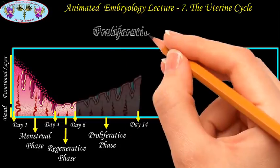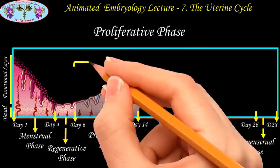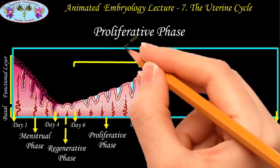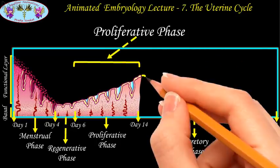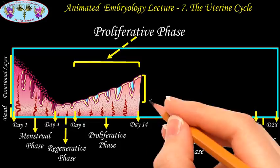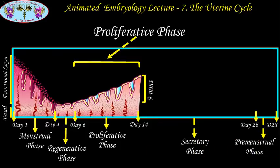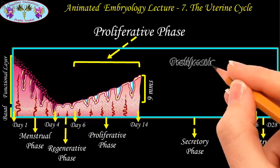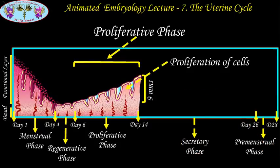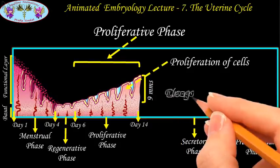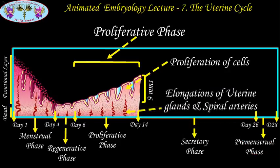The proliferative phase occurs from the sixth to the fourteenth day, up until ovulation. The functional layer gradually increases in thickness up to nine millimeters before ovulation. It involves two processes: first, proliferation of cells that increases the population of stromal cells; and second, elongation of straight tubular uterine glands and spiral arteries into the endometrium from the basal layer.